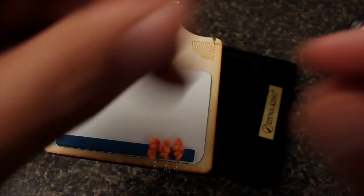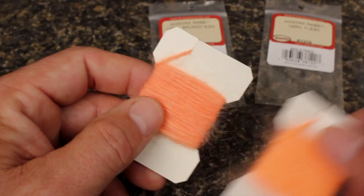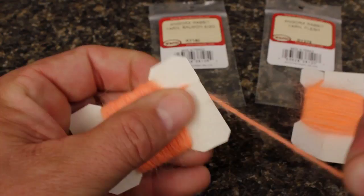By all means, save the remainder of the crystal flesh for another fly. Although other materials will work, Angora Rabbit yarn is the sentimental favorite for Sucker Spawn. Here, I've chosen two slightly different colors, Salmon Egg and Flesh.